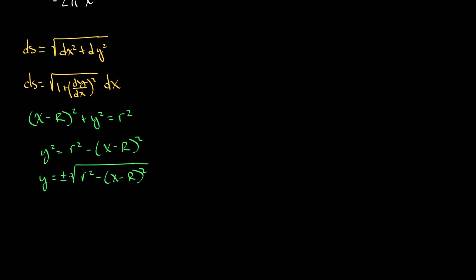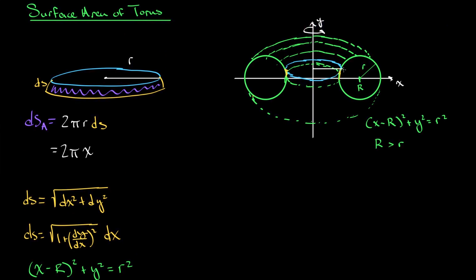The major question is: do we take the positive or the negative root of y? I'm going to say we're going to take the positive root. So y equals the square root of r² minus (x minus R)². On our graph, this represents the top half of our circle. Because we're going to be taking the derivative of this, when we set up our integral, we're only going to be calculating the surface area of this top half of our donut — only half of this torus. So we'll need to remember to multiply whatever we get out of our integral by two.